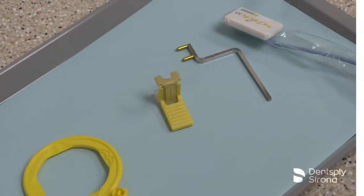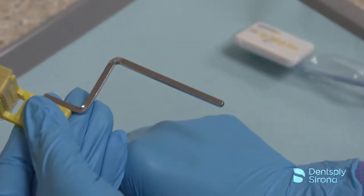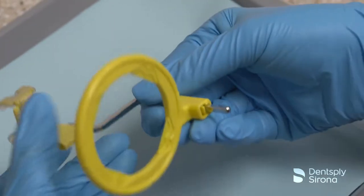To assemble the XCP short arm with XCP DS-FIT posterior bite block, place the yellow pins on the arm into the side of the yellow bite block and slide the arm into the yellow end on the aiming ring.